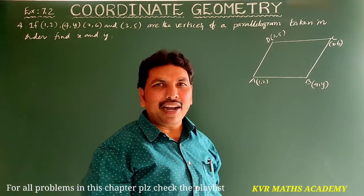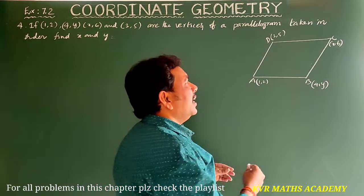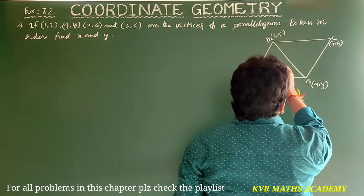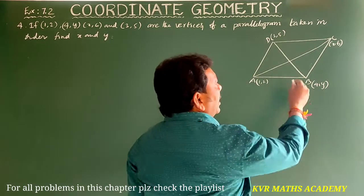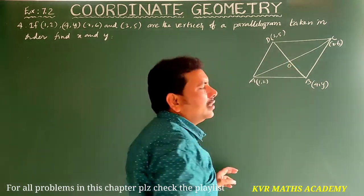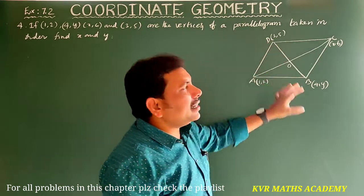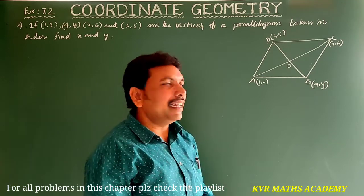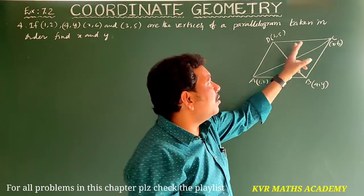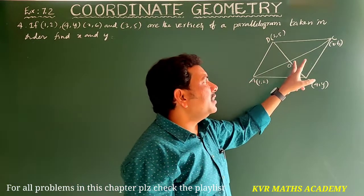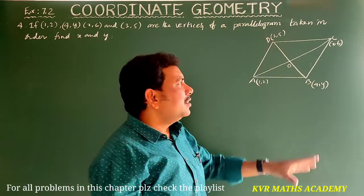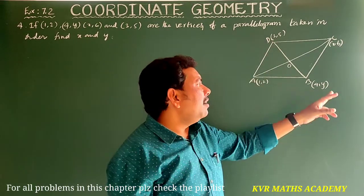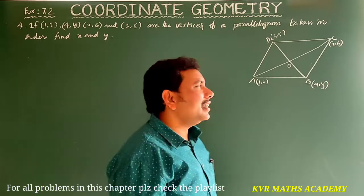How can we find x and y? First, join the diagonals AC and BD. They intersect at O. Diagonals of a parallelogram bisect each other, which means the midpoint of AC is equal to the midpoint of BD.